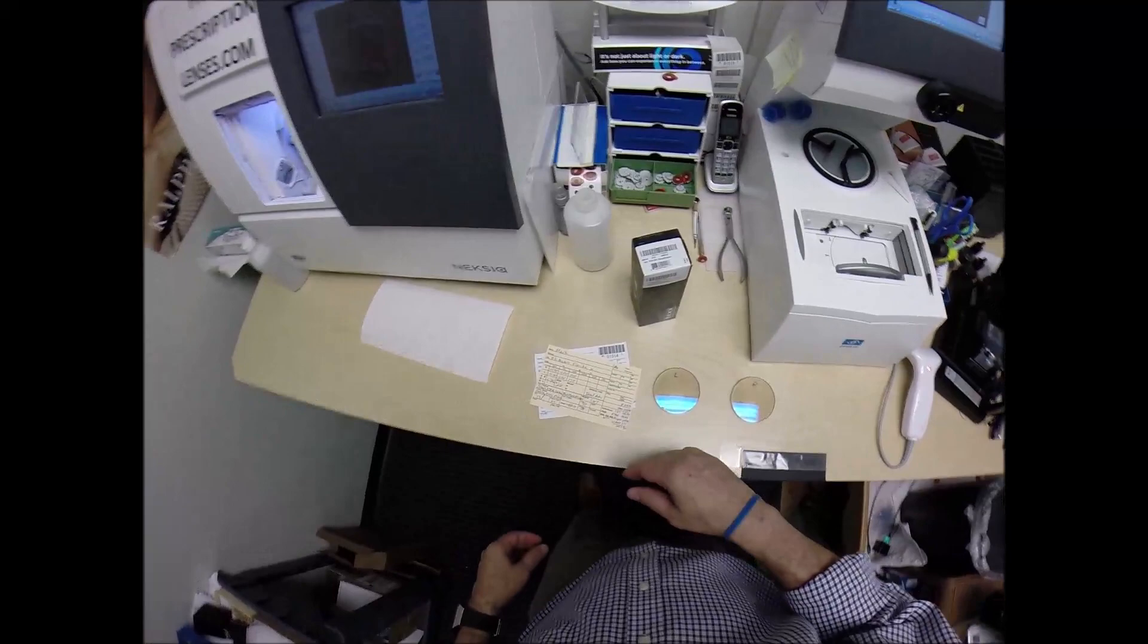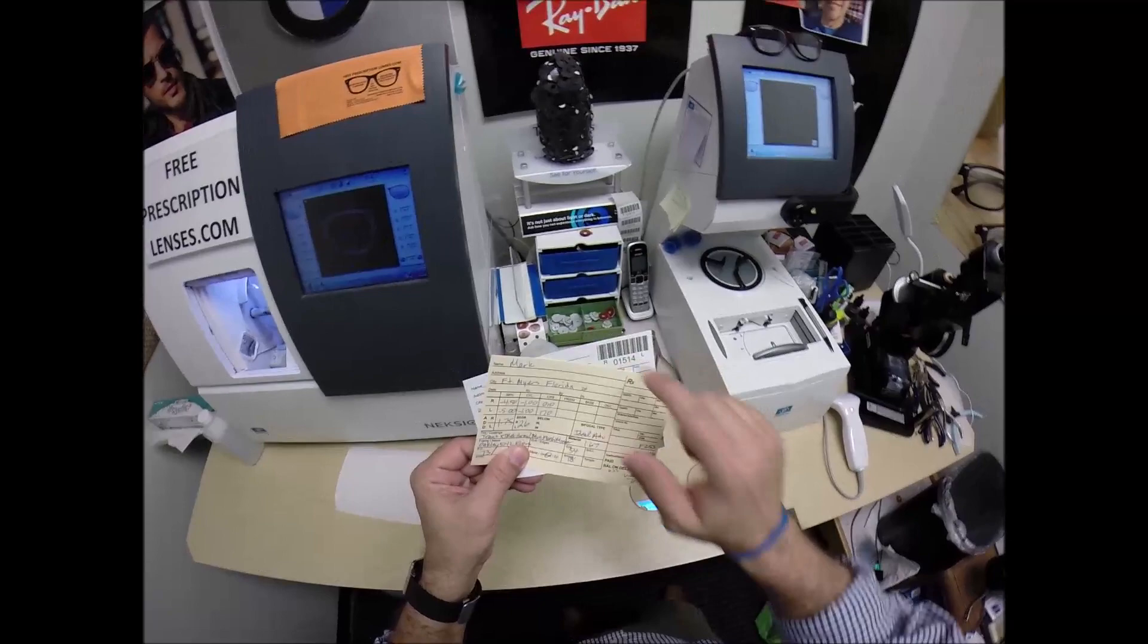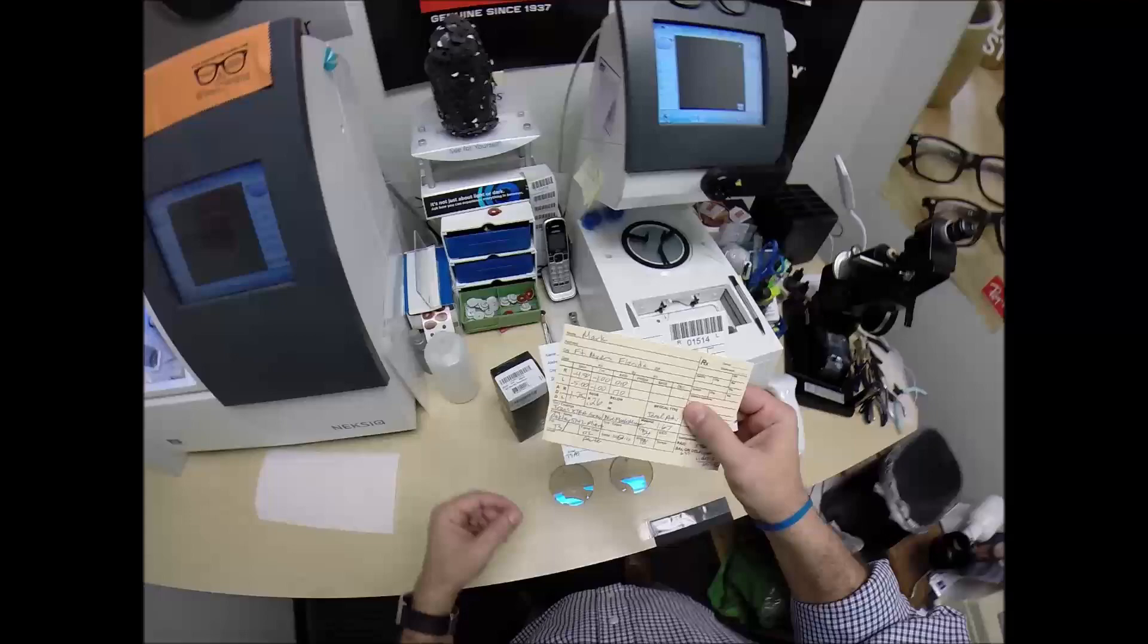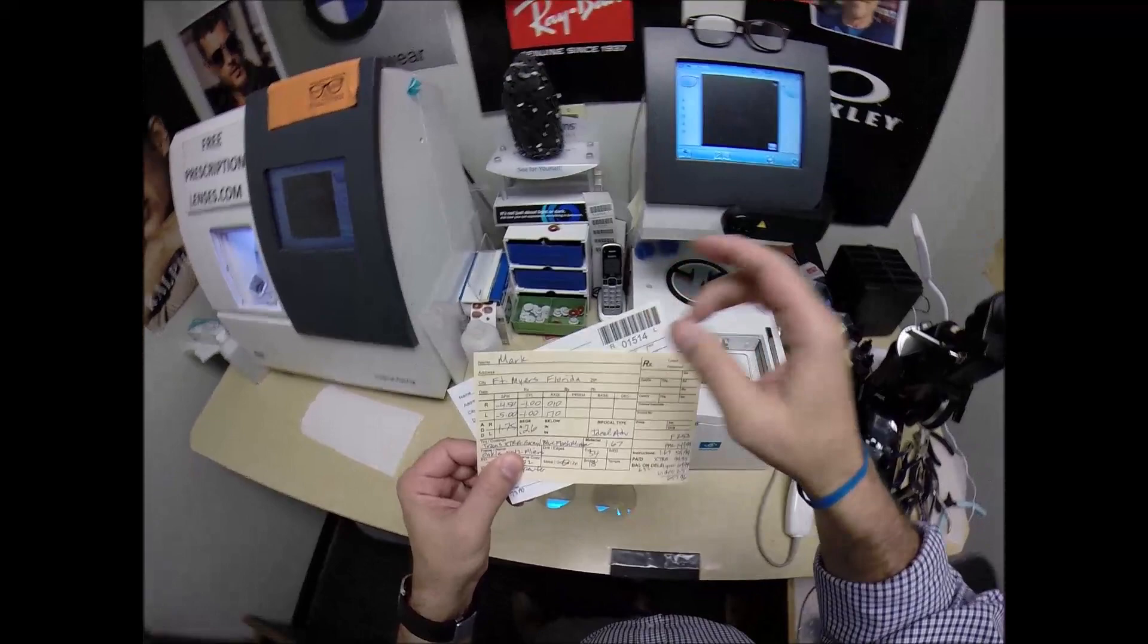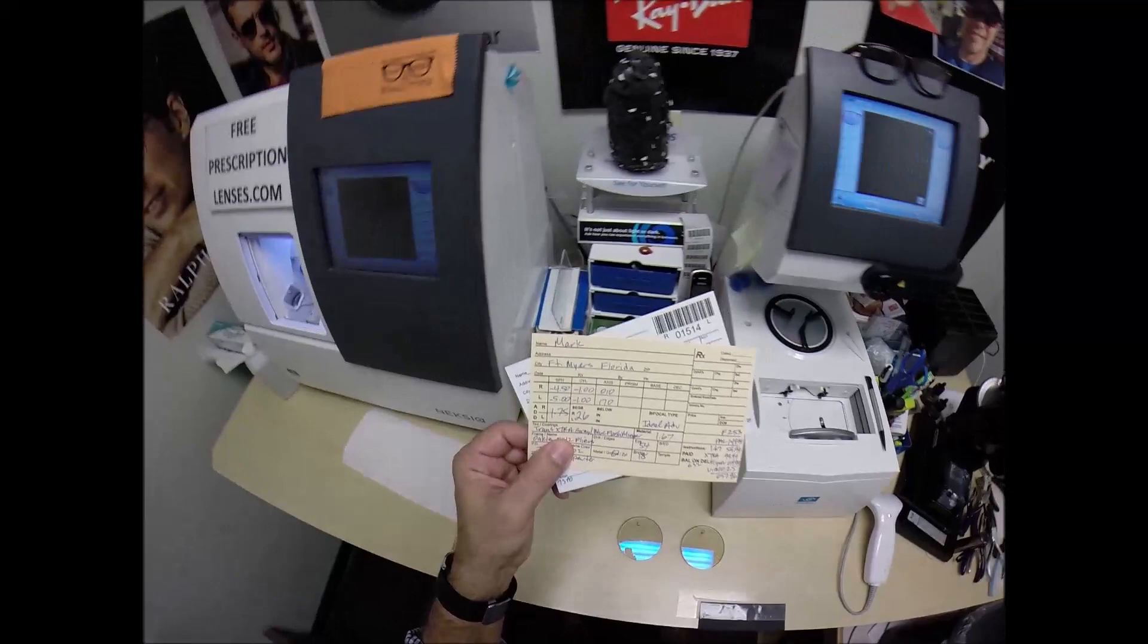And so let me get started. I'm going to be cutting high index progressive Essilor Ideal Advanced transitions extra active gray with the blue flash mirror. And I almost screwed up. I almost started cutting. I put the sticker on your regular card that has your address, email, phone number, all that stuff. Usually my cards are grayish white. The ones you see in my videos are this golden rod color. So I put the sticker on there. Then I realized you paid for a video. I was about to make these without doing the video. So I had to stop everything.